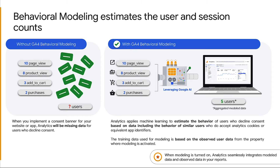When you implement a consent banner, analytics will not drop cookies for users who decline analytics cookies. However, if you enable consent mode and meet the eligibility requirements of behavioral modeling, analytics will use machine learning to model the behavior of these users. The training data comes from the property where consent mode is enabled. Consequently, when modeling is turned on, analytics seamlessly integrates model data and observed data in your reports. Behavioral modeling estimates data based on user and session metrics such as daily active users and conversion rate, that may be unobservable when identifiers like cookies or user IDs are not fully available.